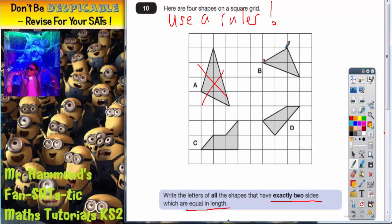Shape B you should find that that side and that side, if you measure them with a ruler, are equal so that one we are interested in.